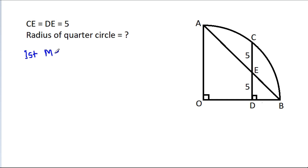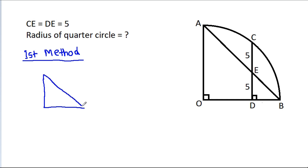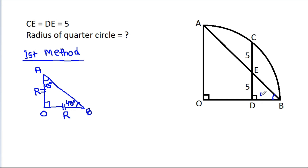First method: consider angle AOB. It is 90 degrees, and since AO equals BO — both being the radius — these two angles will be equal, each being 45 degrees.